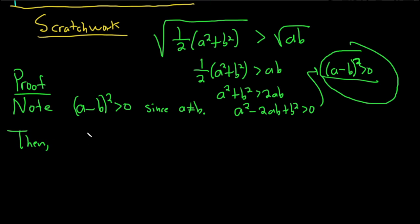Then, we know that this can be multiplied to A squared minus 2AB plus B squared, greater than 0. Right? You can multiply this out. This is the formula. You can write it twice in FOIL. That works, too.